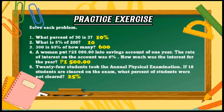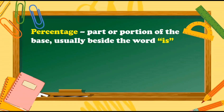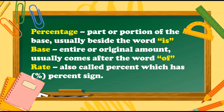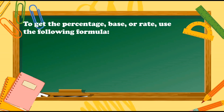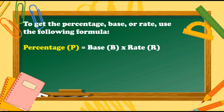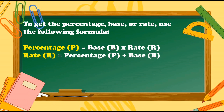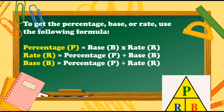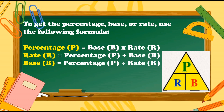Did you get the correct answers? Great! I hope you learned something from that activity. Here are the things you learned today: Percentage is a part or portion of the base, usually beside the word 'is.' Base is the entire or original amount, usually comes after the word 'of.' And rate is also called percent, which has a percent sign. To get the percentage, base, or rate, use the following formulas: Percentage equals base times rate; Rate equals percentage divided by base; Base equals percentage divided by rate. We also use the Tecans triangle to easily remember the formulas.